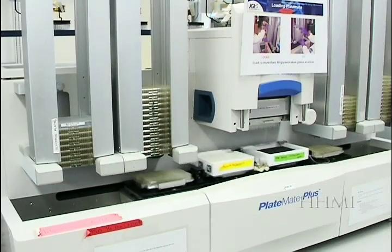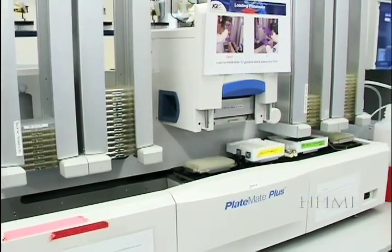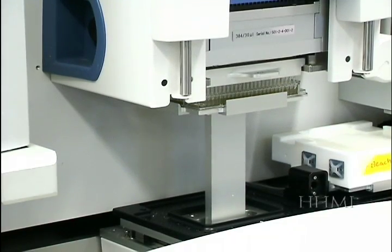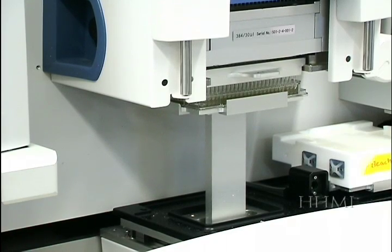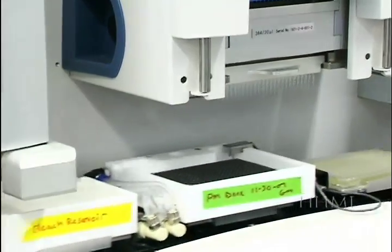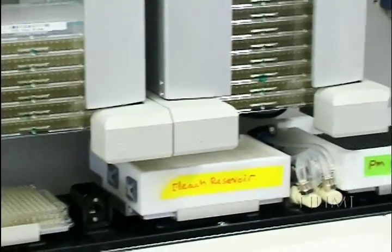The first step is to place the 384 well plates into a plate mate plus robot. This transfers the E. coli into a new 384 well plate that contains a TE buffer solution, which protects the DNA, as the following processes are meant to break apart the cell walls of the E. coli bacteria.